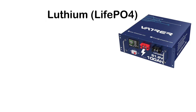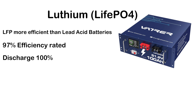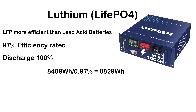We will use lithium iron phosphate (LFP or LiFePO4) batteries, which are more efficient than lead acid batteries. They are about 97% efficient. You can discharge them down to 100% depth of discharge, and after 6,000 cycles they still have 80% remaining capacity. To calculate: 8,409 watt-hours ÷ 97% efficiency = 8,829 watt-hours required.